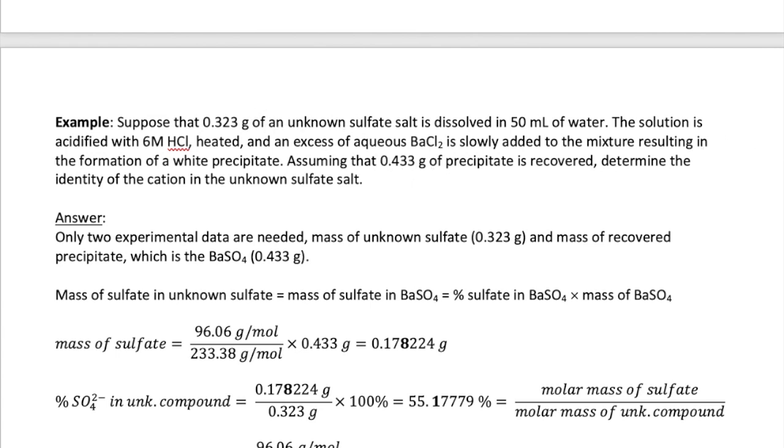First, we must determine the mass of sulfate in our unknown sulfate. Because we assume that all the sulfate is converted to barium sulfate, the mass of sulfate in the unknown sulfate is also equal to the mass of sulfate in barium sulfate. The mass of sulfate in barium sulfate we can calculate by multiplying the percent composition of sulfate in barium sulfate and the mass of the barium sulfate. The percent composition of sulfate in barium sulfate is just the molar mass of sulfate, 96.06 grams per mole, divided by the molar mass of the barium sulfate, which is 233.38 grams per mole, times the mass of barium sulfate, which is 0.433 grams. This gives us the following answer with the third digit bolded to keep track of significant figures.